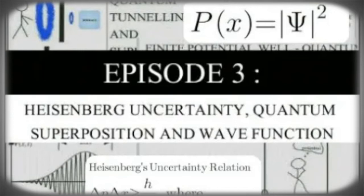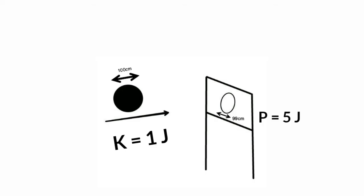Wave-like interference of photons. Here we will take a classical example to understand the principle of quantum superposition. Imagine there is a basketball of 1 meter in diameter and a basketball goal post of 99 centimeter in diameter.